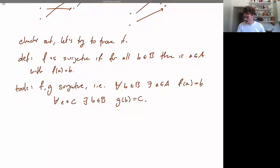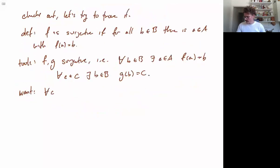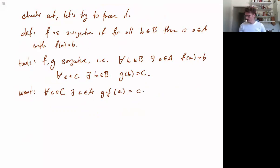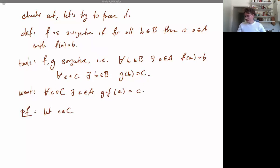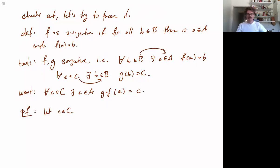And what we want is: for all c in C, there is an element a in A such that g∘f(a) = c — we want to show that g∘f is surjective. Basically, can we combine these tools to get something like this? So let's try it. Remember that what we want to produce is an element of A. If we look back at our tools, we can get from C to B using surjectivity of g, and then from B to A using surjectivity of f. So that gets us to A somehow. Let's write that down and see if it works.